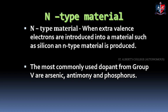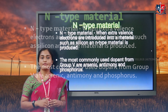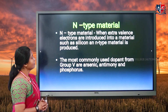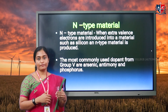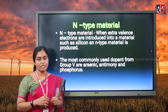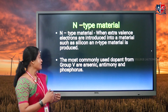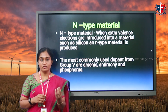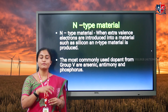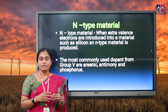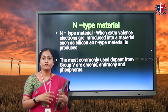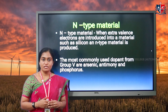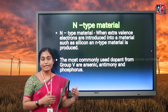A PN junction diode contains an N-type semiconductor material and a P-type semiconductor material. The N-type semiconductor is formed when extra valence electrons are introduced because of doping by a pentavalent impurity. Usually, we use arsenic, antimony, and phosphorus for doping. We use silicon or germanium as the semiconductor material and introduce this pentavalent impurity. As a result, extra electrons get freed from the semiconductor structure for current conduction. Because of the excess electrons, it is termed an N-type or negative-type semiconductor.